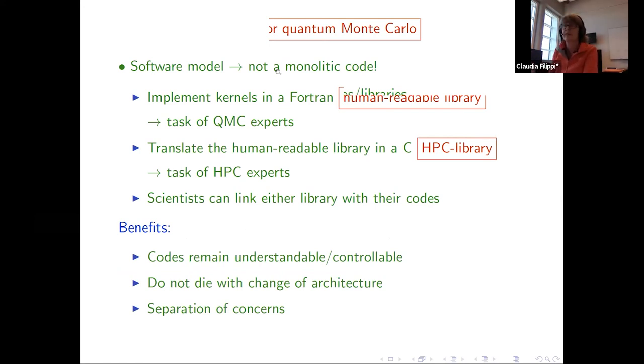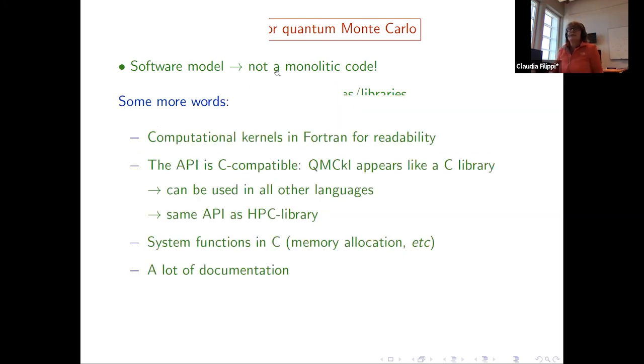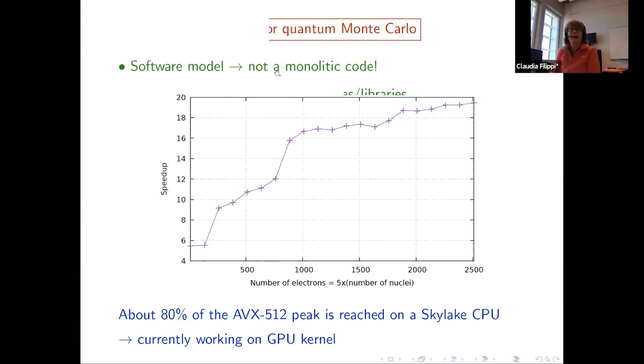And the scientists can link either library within the code. So the codes remain understandable, controllable. They don't die if we change architecture, and we're having a separation of concern between QMC expert and high-performance computing expert. For the human-readable library, which is Fortran - most of us are still programming Fortran - the API will be C compatible and the same for the high-performance computing library. So to the eyes outside it will appear like a C library. The system functions inside will be in C and we will give a lot of documentation like you guys are doing. Almost finished. Okay. Our first application is the Jastrow factor. I mentioned it before. So we will extract it actually from my code. A postdoc of mine rewrote it in an understandable manner. And then there was a lot of massaging from various groups, but we are still in the human-friendly version. And already, for instance, we gain a factor of 20. We are going to many electrons - 2,500 electrons. And we are having a library which is still human-friendly which has very good performance on a CPU.